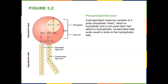Here is the phospholipid bilayer. A phospholipid molecule consists of a polar phosphate head, which is hydrophilic, and a non-polar lipid tail, which is hydrophobic — meaning it does not like water, while hydrophilic means loves water. These hydrophilic heads are attracted to the outer surface of the cell membrane, and the hydrophobic tails face inward, toward the cytoplasm. Unsaturated fatty acids result in kinks in the hydrophobic tails.